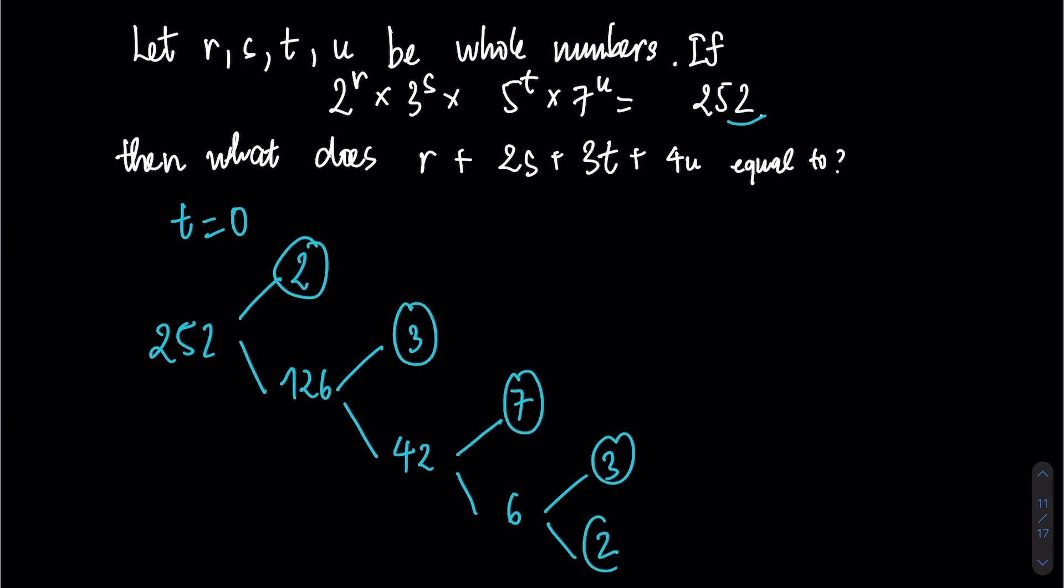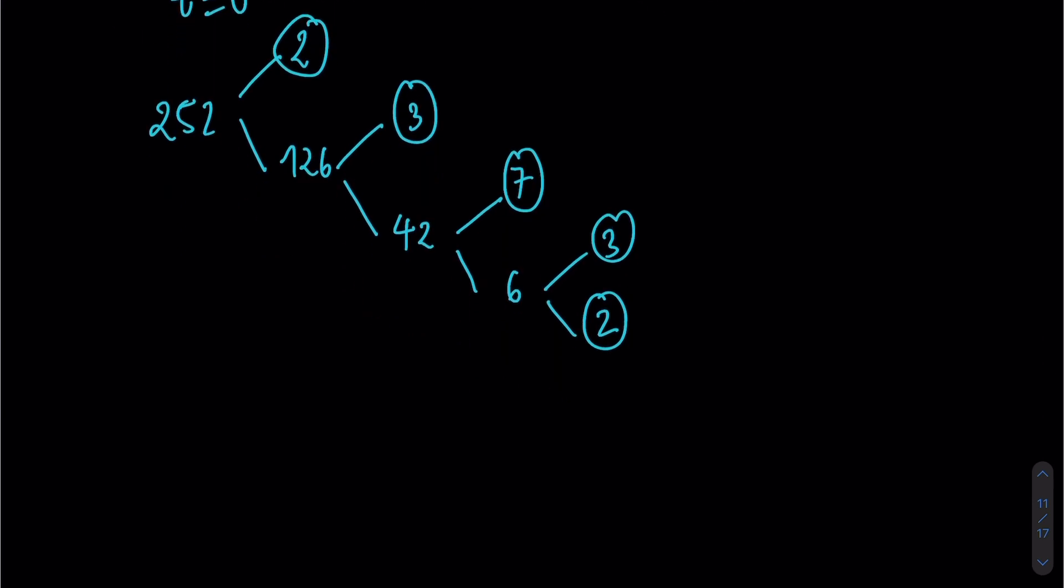Therefore, my final answer for prime factorization is 252 equal to 2 times 2 times 3 times 3 times 7, which equals 2 squared times 3 squared times 7 power 1.